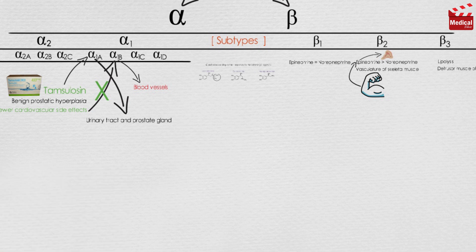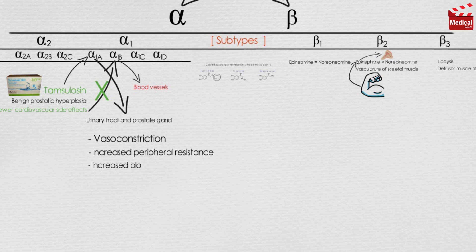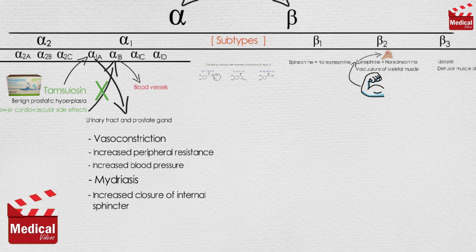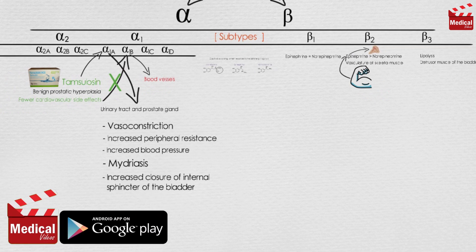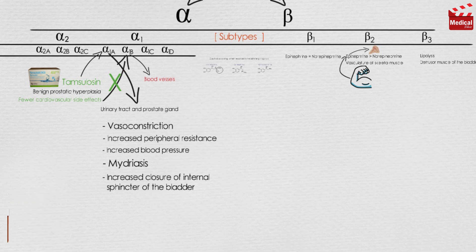The activation of alpha 1 receptors produces vasoconstriction, increased peripheral resistance, increased blood pressure, mydriasis, and increased closure of internal sphincter of the bladder. The activation of alpha 2 receptors produces inhibition of norepinephrine release, inhibition of acetylcholine release, and inhibition of insulin release.